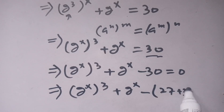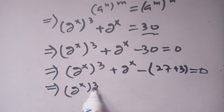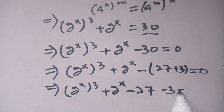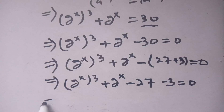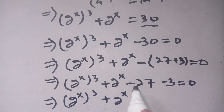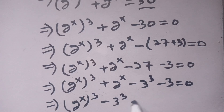We rewrite minus 30 as minus 27 minus 3. So the equation becomes 2 to the power x, bracket to the power 3, plus 2 to the power x minus 27 minus 3, is equal to 0. We can then rewrite this as 2 to the power x, bracket to the power 3, minus 3 to the power 3, plus 2 to the power x minus 3, is equal to 0.